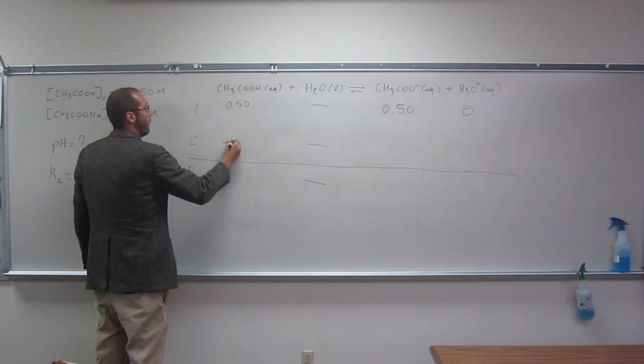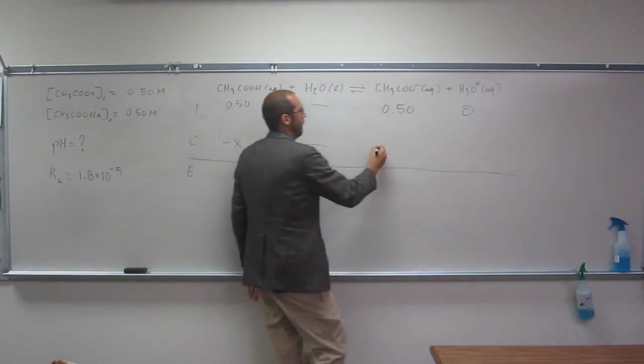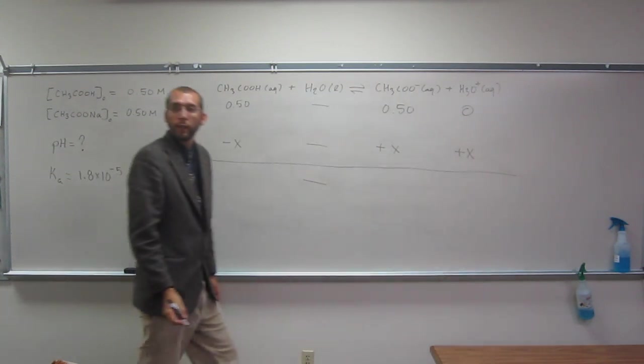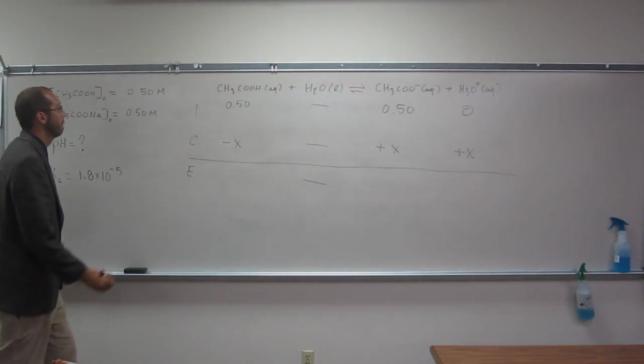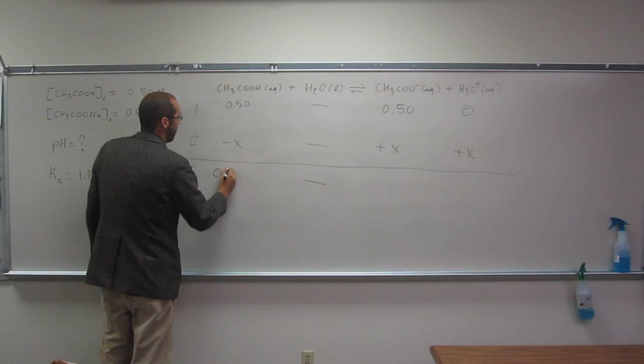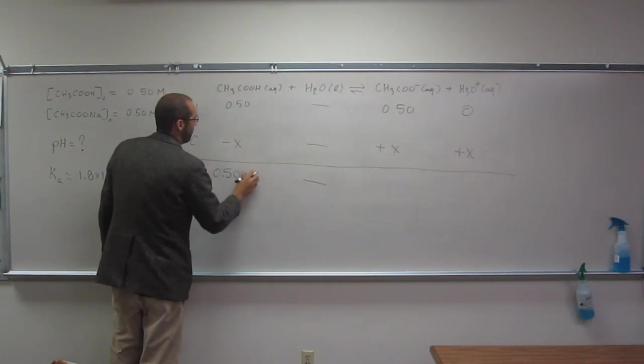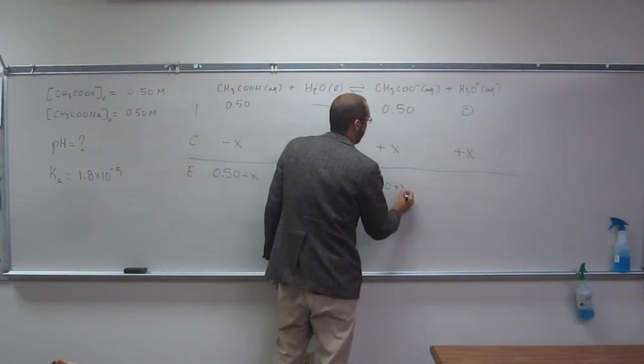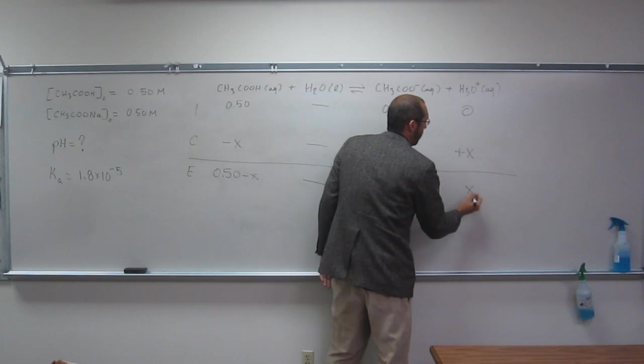So this is minus X, plus X, plus X. Then we have 0.50 minus X, 0.50 plus X, and X. Is everybody okay with that?